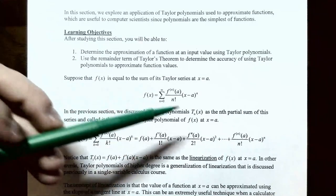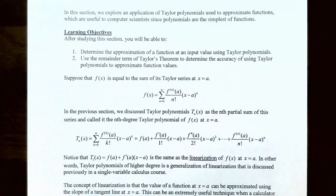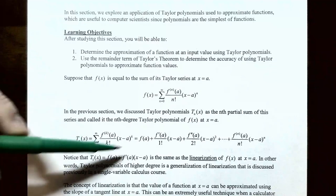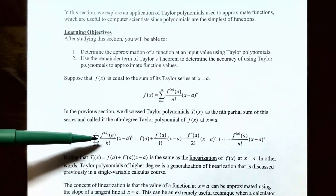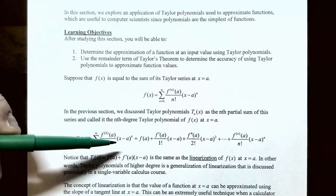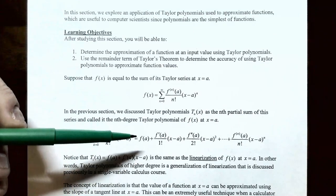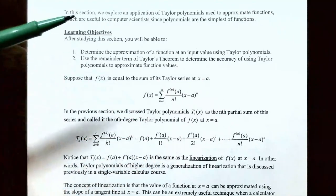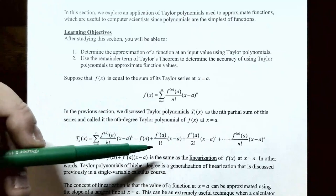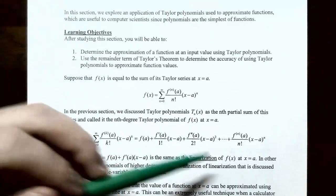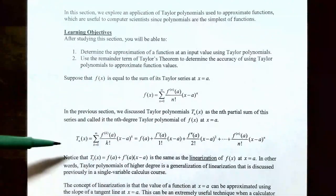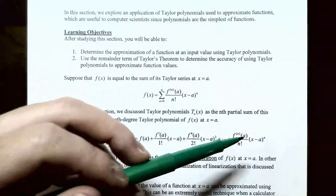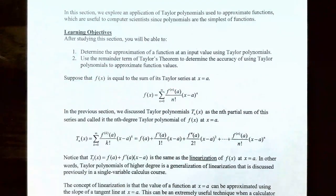In a previous video we talked about Taylor polynomials. T_n(x) is actually the nth partial sum of this Taylor series, called the nth degree Taylor polynomial of f(x) at x equals a. It can be written as the sum from k equals zero to n of the kth derivative of f evaluated at a, divided by k factorial, times (x − a)^k. Expanded out, this is f(a) plus f′(a)/1! times (x−a) plus f″(a)/2! times (x−a)², and so on up to the nth derivative of f evaluated at a, divided by n factorial, times (x−a)^n.